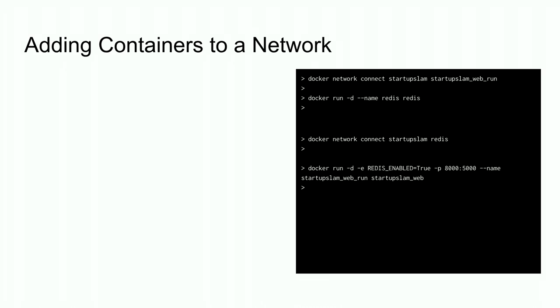Because we've connected things inside the same Docker network — two containers inside the same network — they can communicate over any port together, so you don't need to publish Redis's port to the host for them to talk to each other.